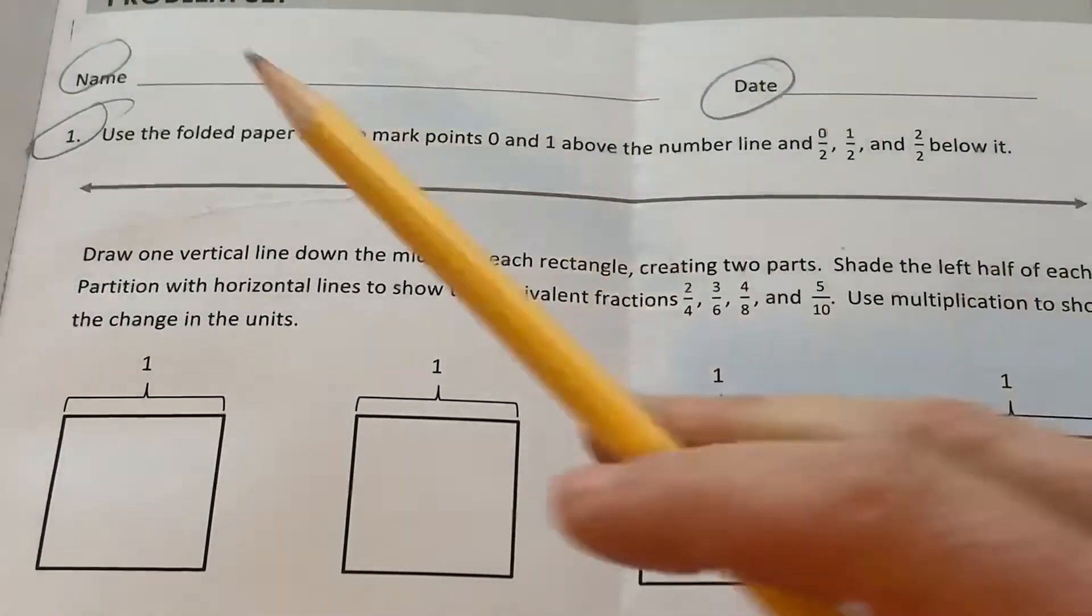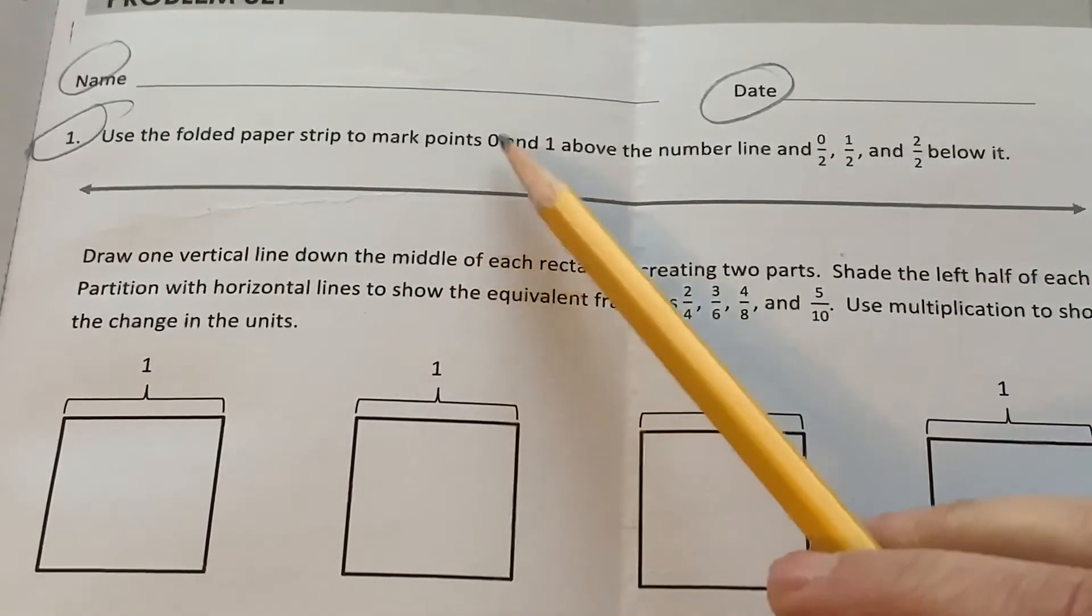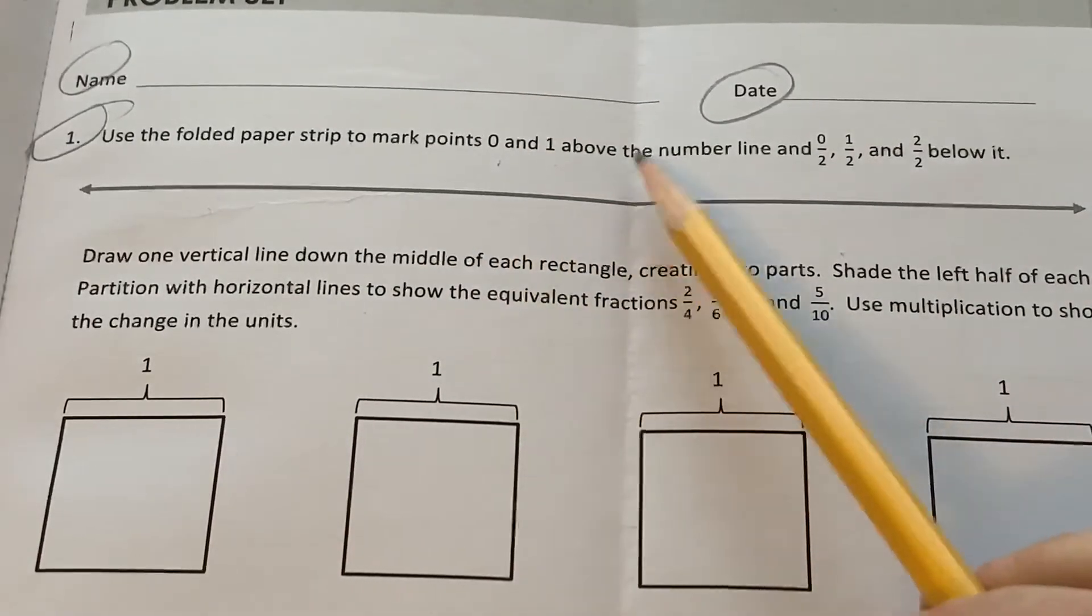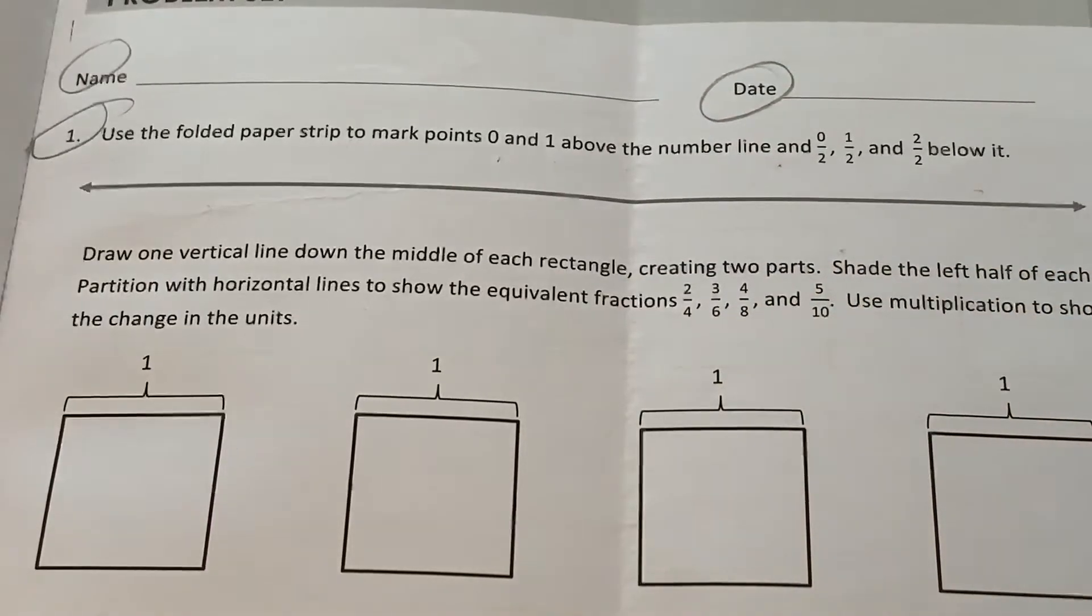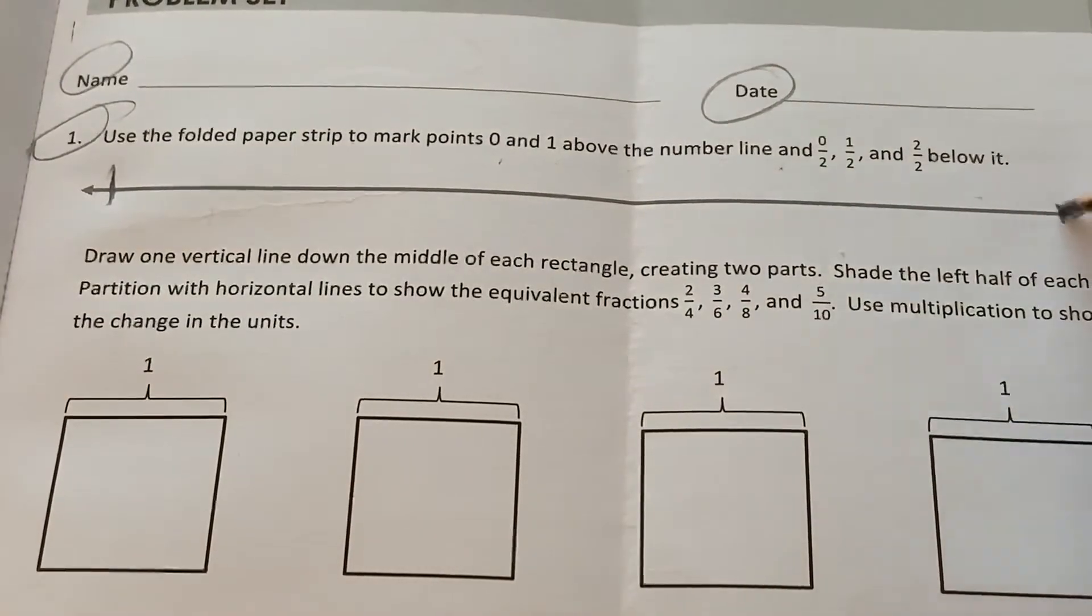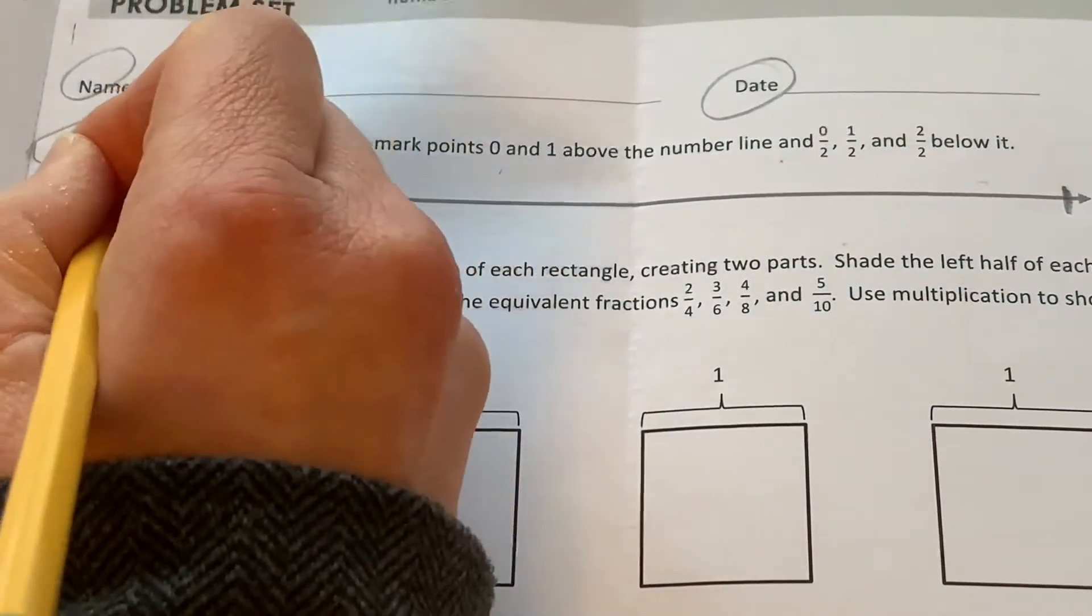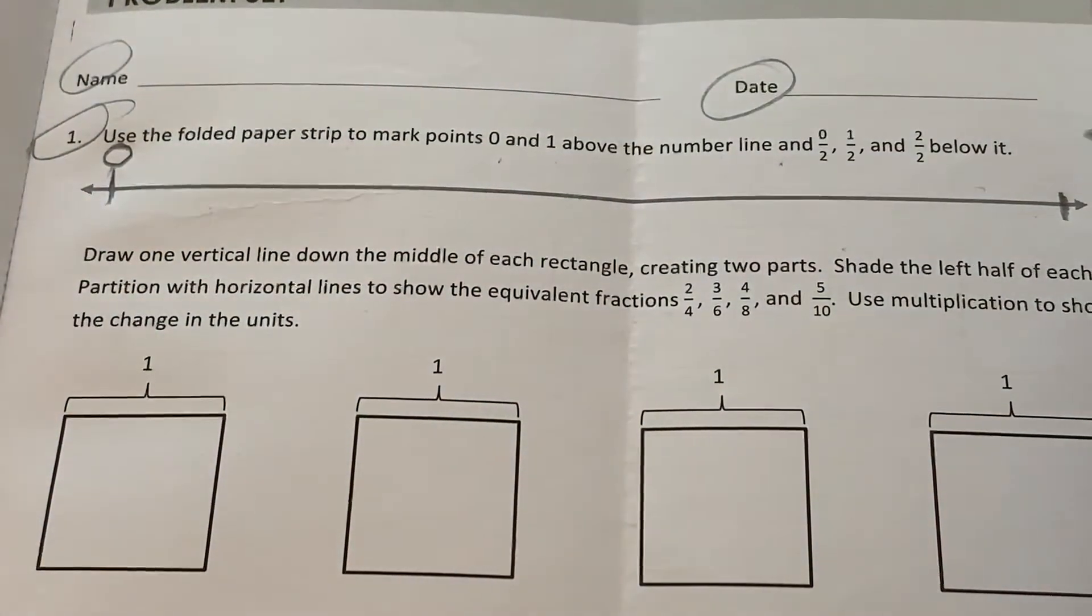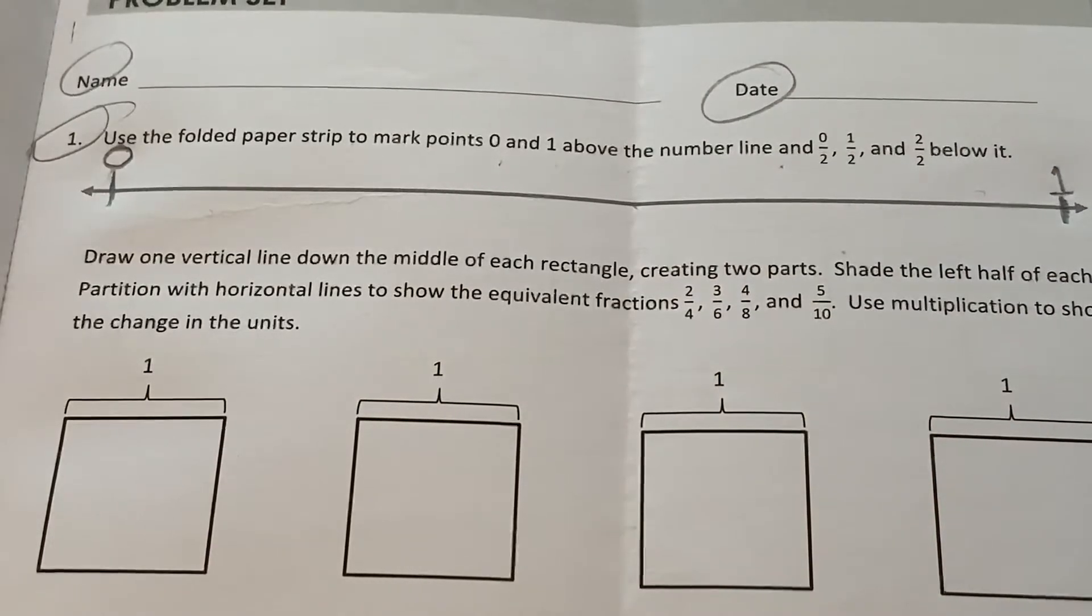It says, use the folded paper strip, that's what we just did, to mark points 0 and 1 above the number line. Okay, here's the number line. So let's mark a beginning and an end. And it said above, we're supposed to mark a 0 and a 1. So what would the middle be? That's right, 1 half or 0.5.